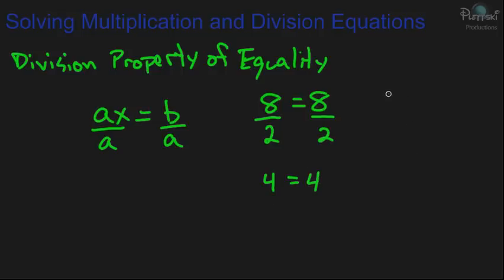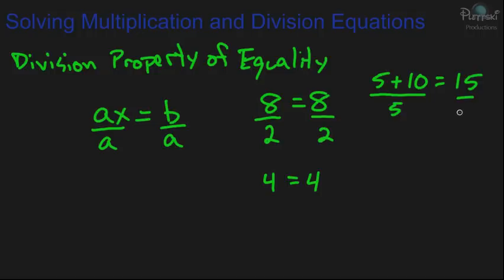Let's see one that's a little more complex. Let's say we have 5 plus 10 equals 15. The division property of equality says that if we divide both sides by 5, it should stay equal. And it does — because when we divide the left side by 5, well 5 plus 10 is 15, and 15 divided by 5 is 3. That should equal 15 divided by 5, which is also 3.